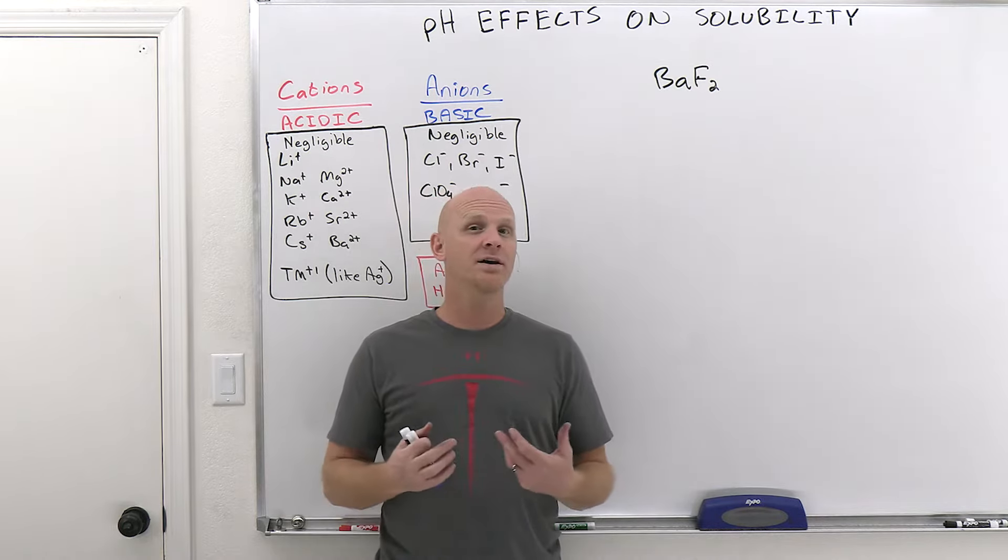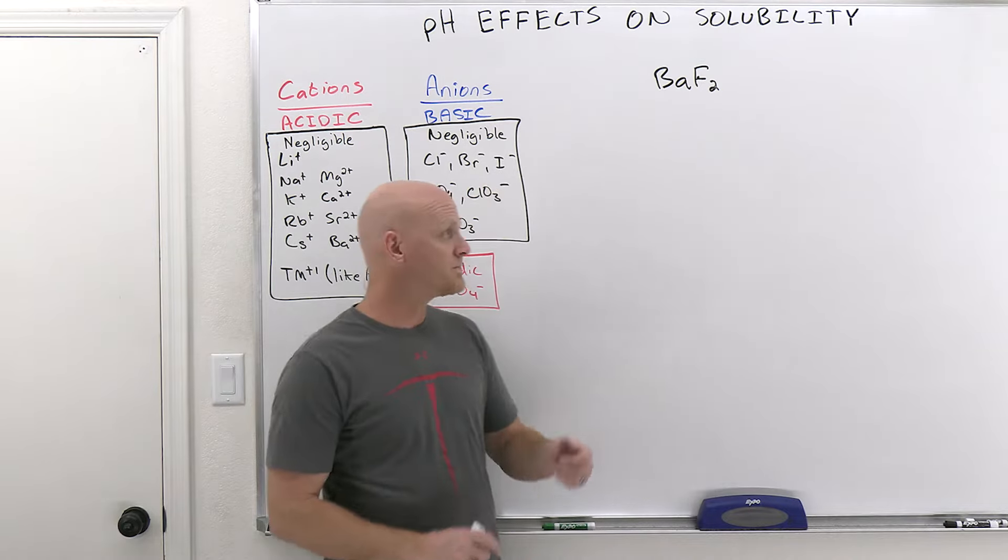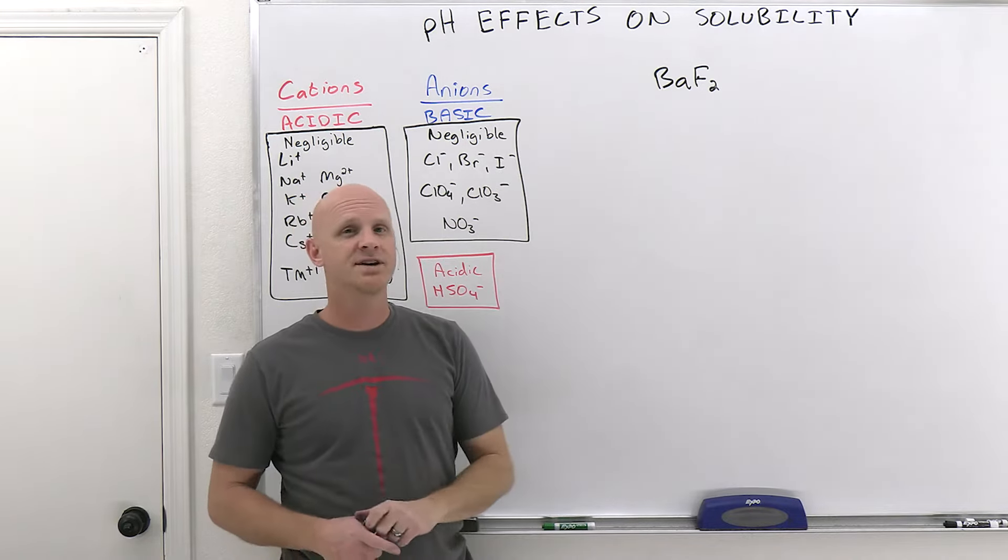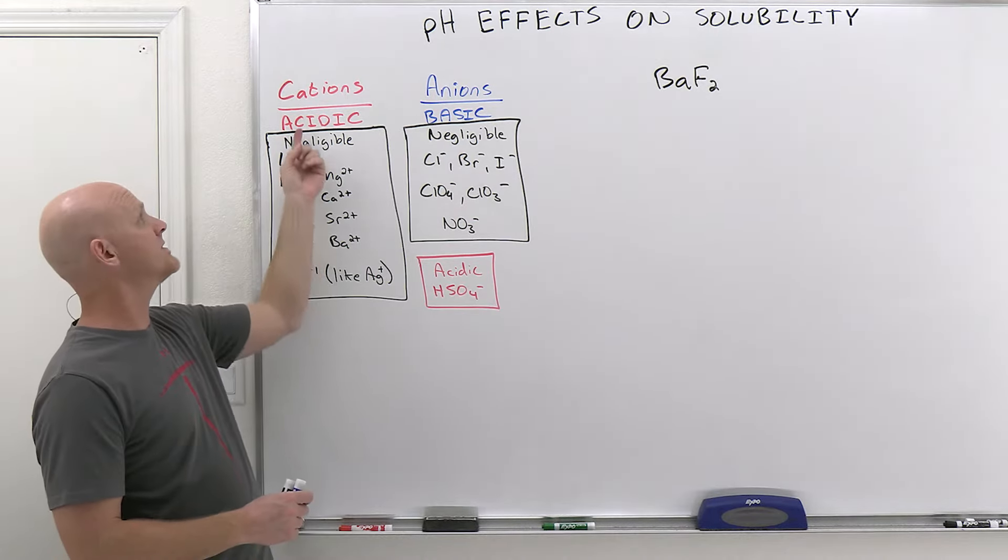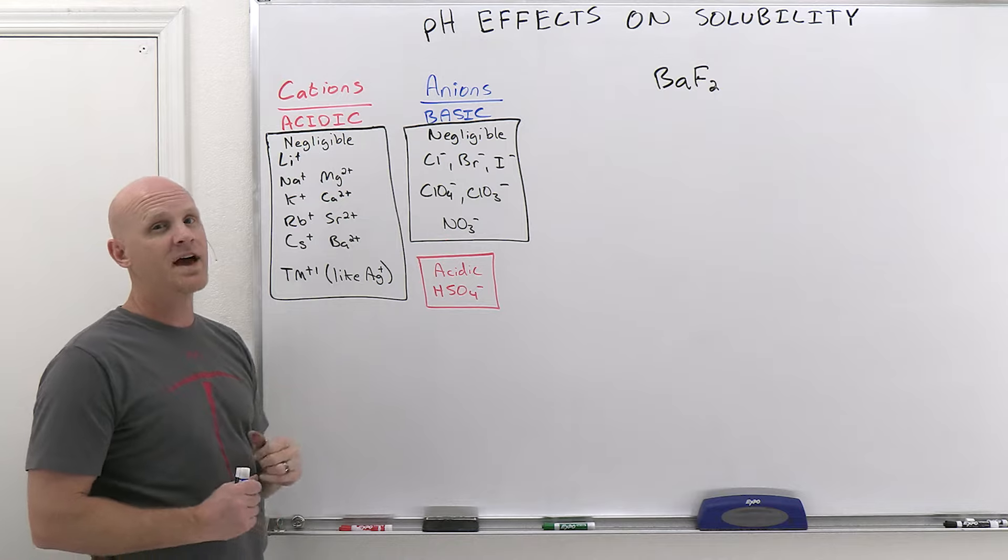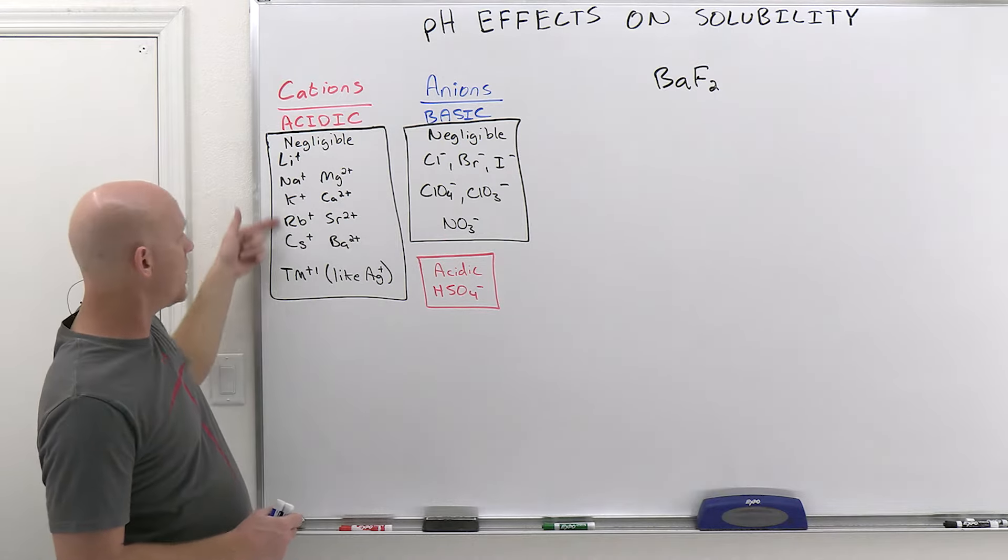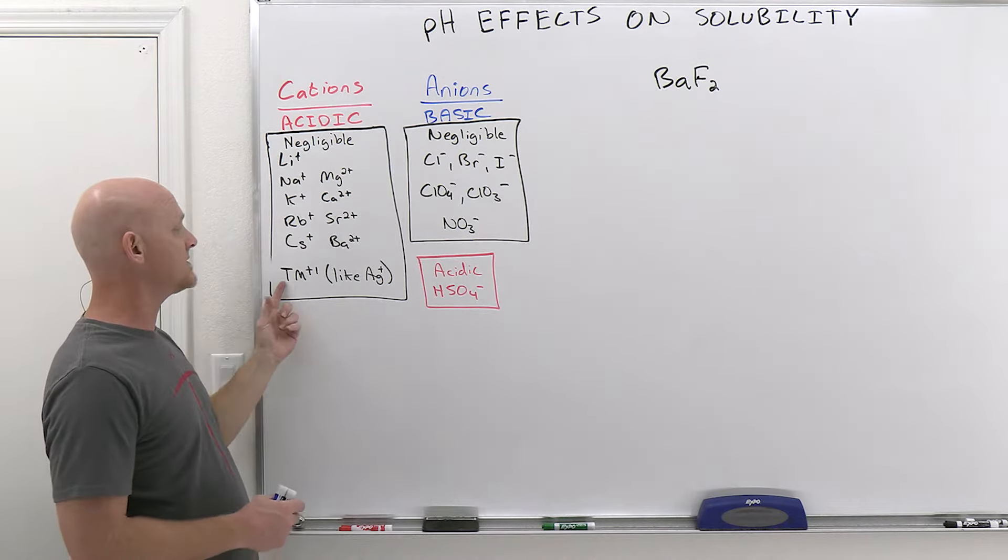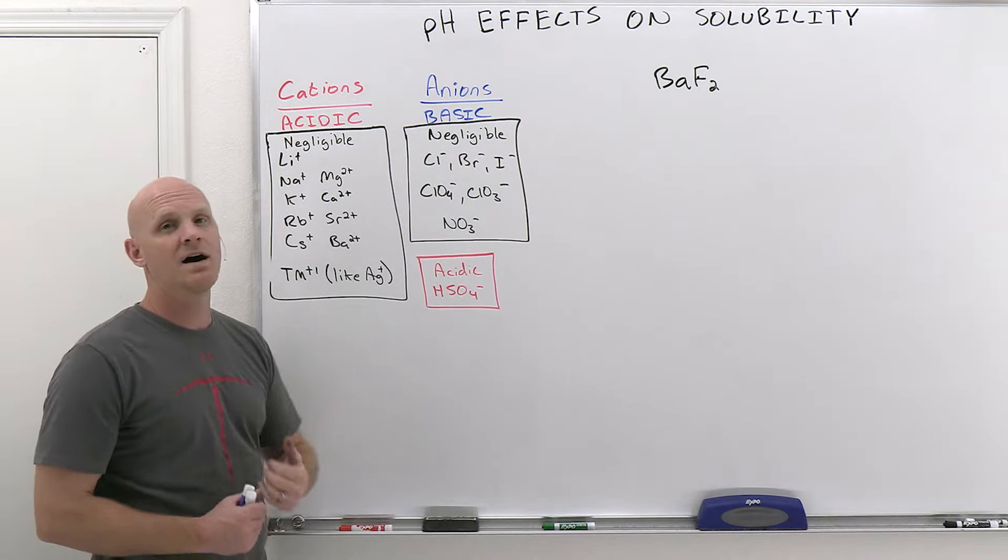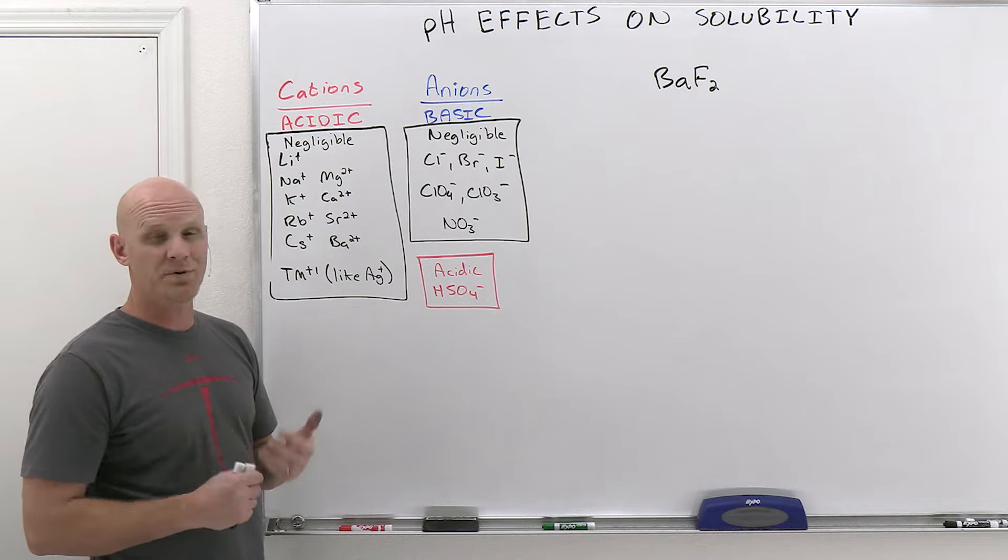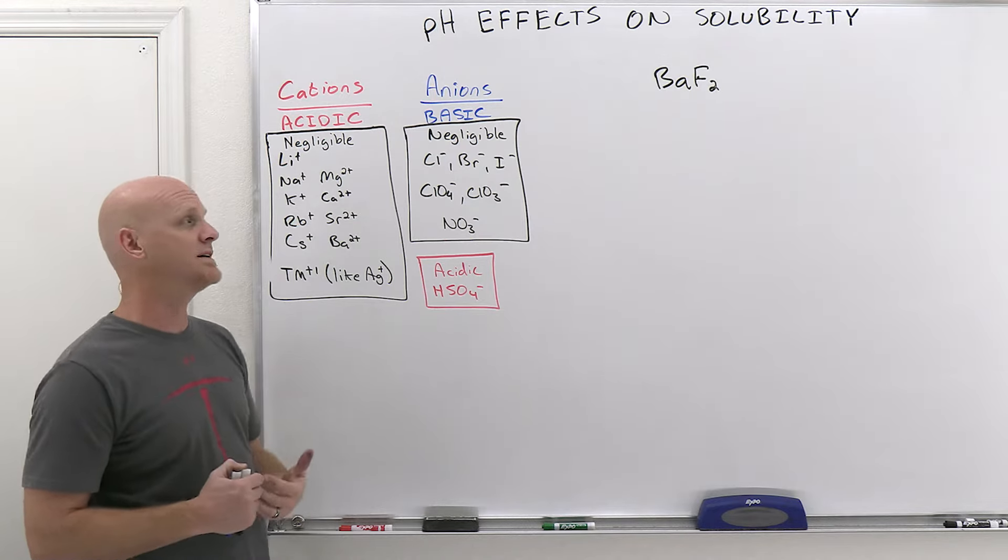So now we're going to spend a little time talking about why. We're going to use barium fluoride as our textbook example, and you might recall some rules from how we identify cations as being either acidic or negligible. Most cations are acidic. However, the group one and group two metal ions, or any transition metal that's a plus one charge, like Ag+, we look at those as being negligible as well, but pretty much just about any other cation is going to be acidic.